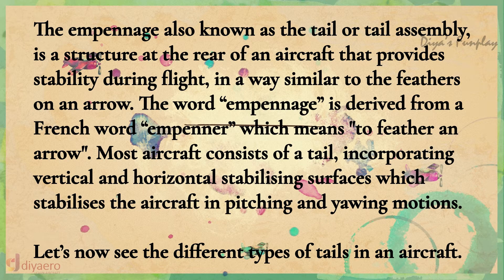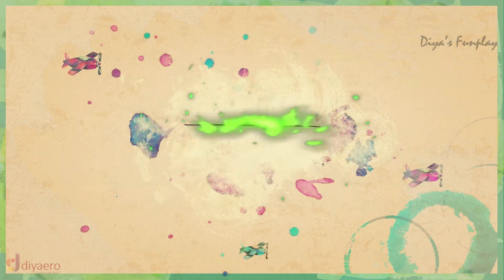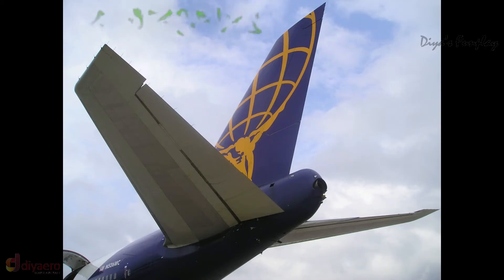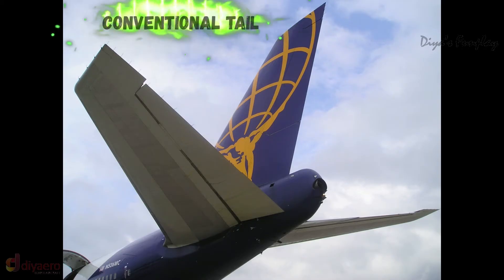Most aircraft consist of a tail incorporating vertical and horizontal stabilizing surfaces which stabilize the aircraft in pitching and yawing motions. Let's now see the different types of tails in an aircraft.